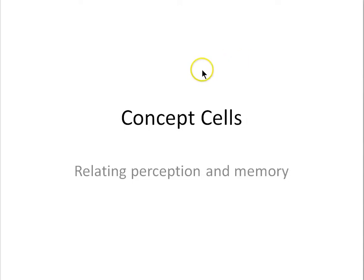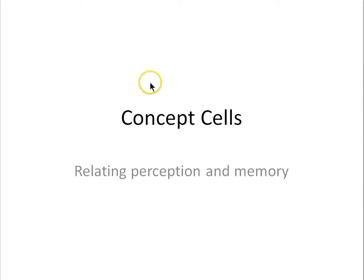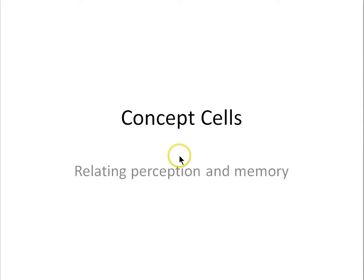In this and the following lessons, we'll examine a fairly recent idea in the neurosciences: that brains — human brains — have cells that we will call concept cells, and they may be instrumental in relating the perceptual systems and the memory systems, linking them together.